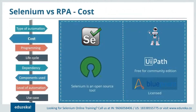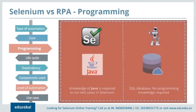Regarding cost: Selenium is an open source tool and is free. RPA has a set of tools — UiPath, Automation Anywhere, and Blue Prism. UiPath is free for the community edition with licensed advanced versions. Automation Anywhere offers a free trial for one month with licensed advanced versions. Blue Prism is completely licensed. On programming knowledge: Selenium requires knowledge of Java to run test cases, whereas RPA requires no coding knowledge as it deals with back-end processes and database operations.